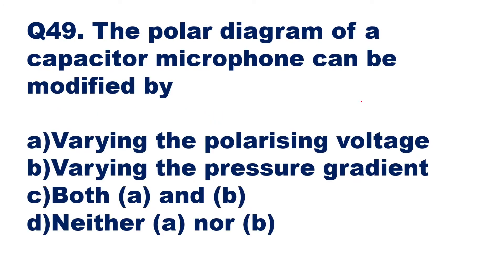Question 49: the polar diagram of a capacitor microphone can be modified by — varying the polarizing voltage, varying the pressure gradient, both A and B, or neither. The polar diagram means the way input sound waves come from different directions. The answer is varying the polarizing voltage. If you vary the polarizing voltage, the polar diagram of a capacitor microphone can be modified — option A is the right answer.